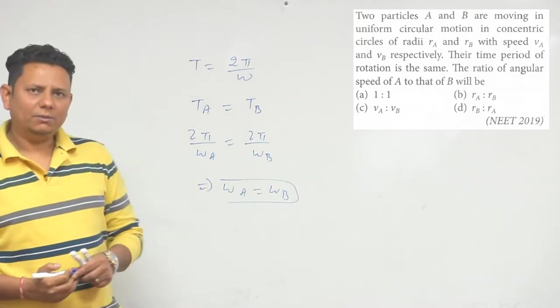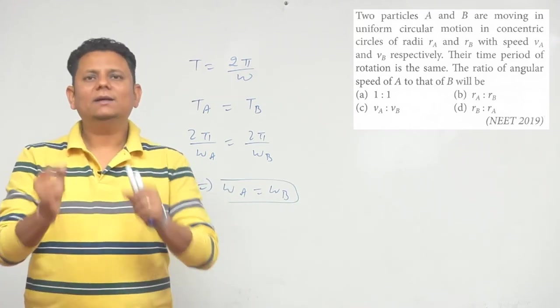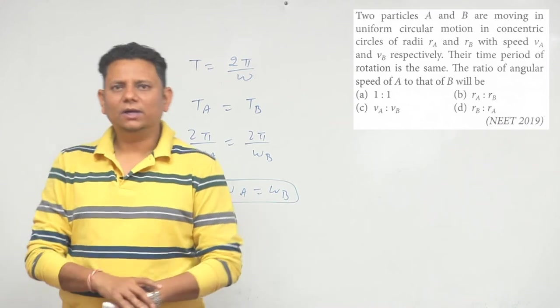Which means option number A, 1 is to 1 will be the right answer. So the right answer will be 1 is to 1.